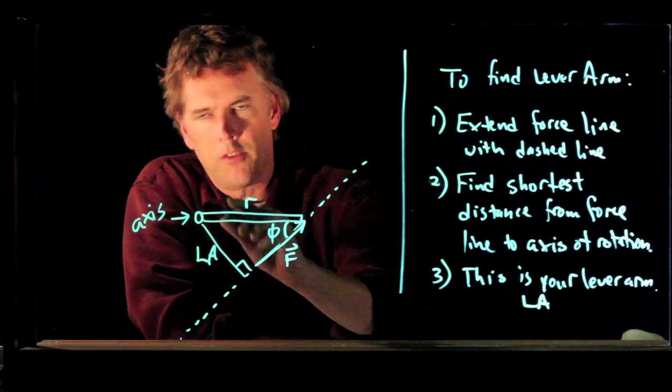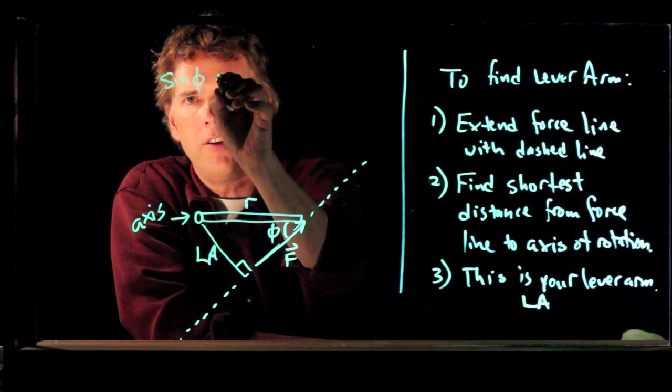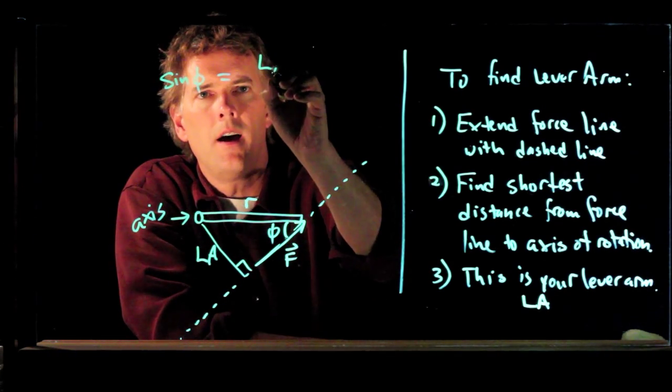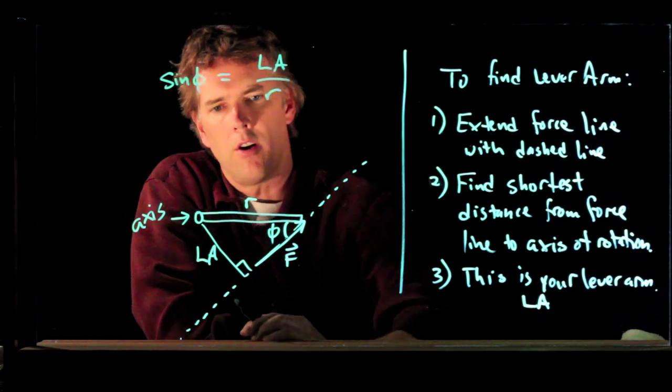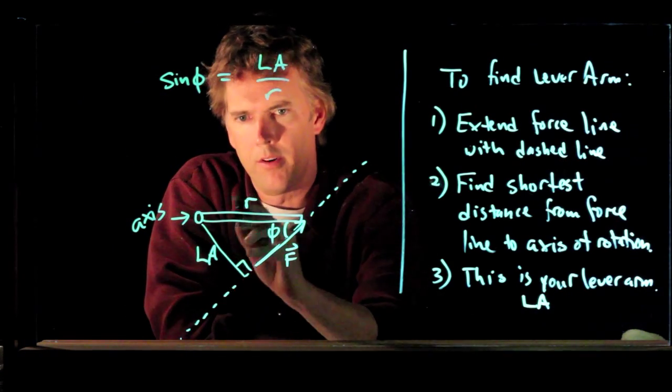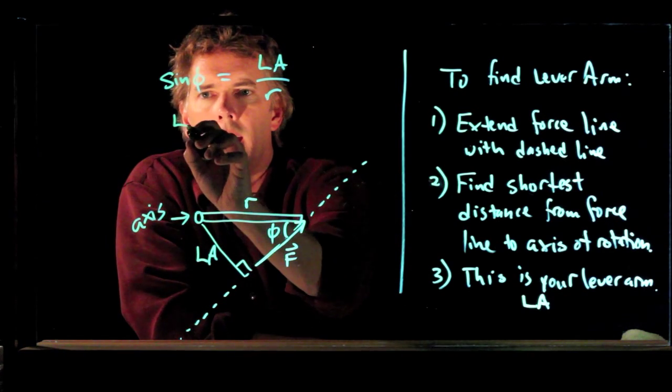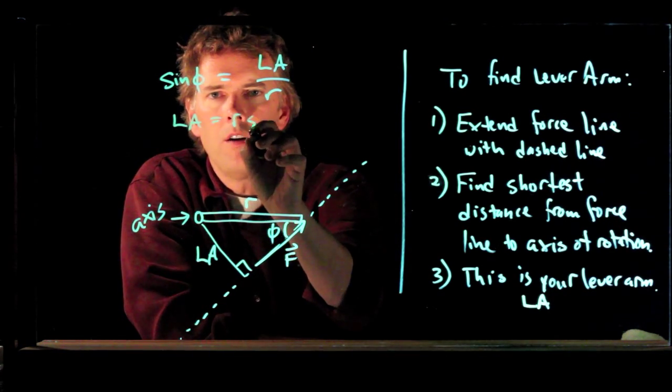And if we look at this triangle, what do we get? The sine of phi is equal to L-A over R. Sine is opposite over hypotenuse. So, L-A is equal to R sine phi.